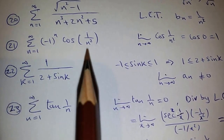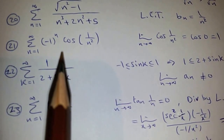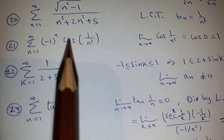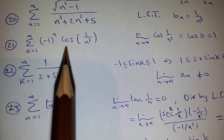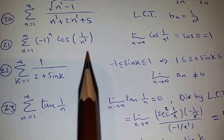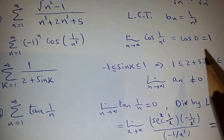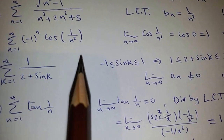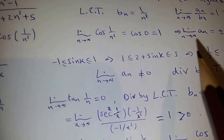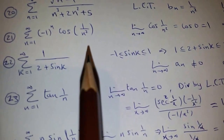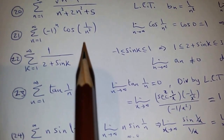Now for this question, if you find the limit of B_N, it would be cosine of the limit of 1/N², which is cosine(0) = 1. So the limit of A_N would be plus or minus 1, and this series is divergent by the test for divergence.